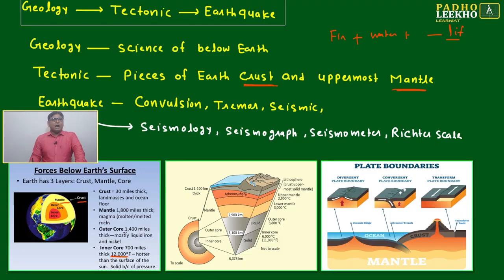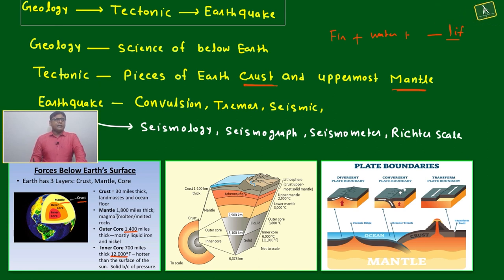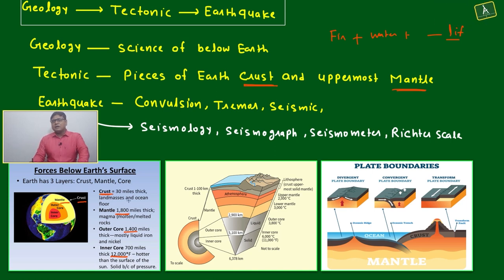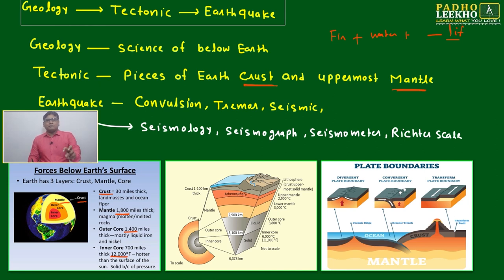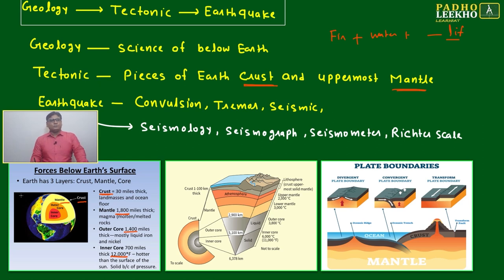The outer core is just 1400 miles thick, mostly liquid iron and nickel. For our vocabulary purpose, we will mostly discuss up to the crust and mantle — we will not go much deeper because that will fall under the subject area of geology.